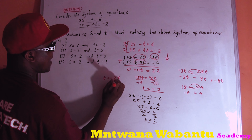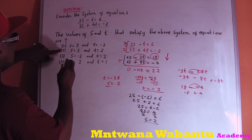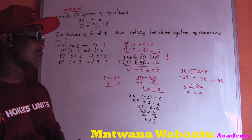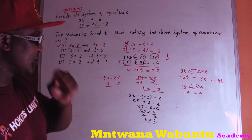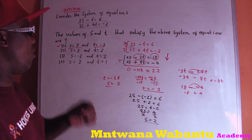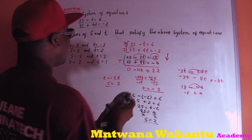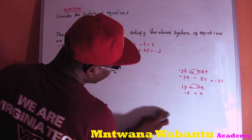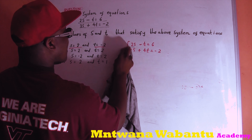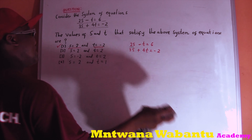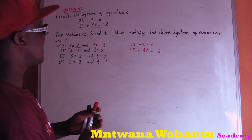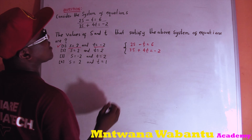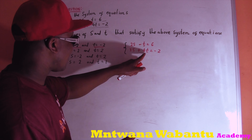So t equals negative 2 and s equals 2 — that's option one. That's how you solve it. Now let's say you are forced to start by eliminating t instead. We started by eliminating s; now let's try eliminating t to get the value of s first.